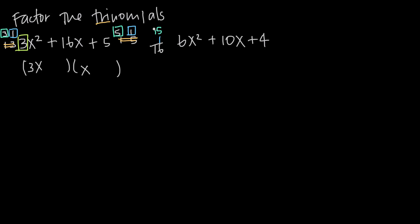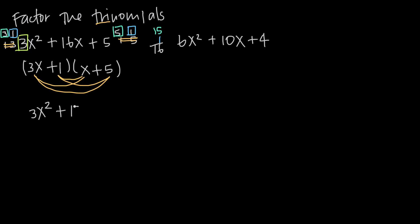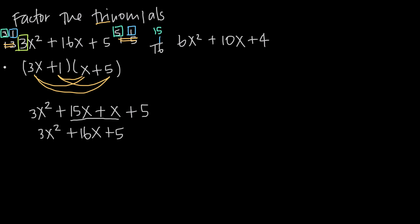We need to put the 3 and the 5 together to make 15, which means the 5 has to go here so that when we FOIL, the outer terms — 3 times 5 — give us 15. That means the 1 goes in the other spot, giving us plus 1. When we FOIL — first, outer, inner, last — we get 3x squared, plus 15x, plus x, plus 5. Combining like terms, 15x and x give us 16x, and we get plus 5, which is back to our original trinomial.